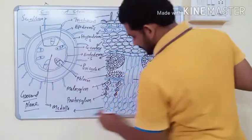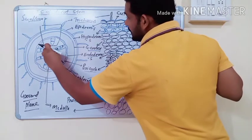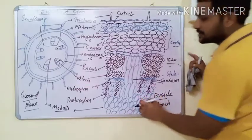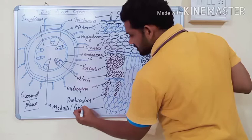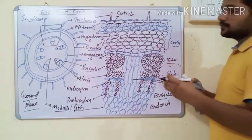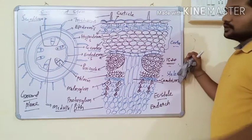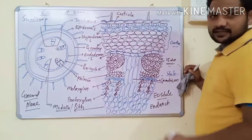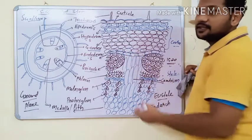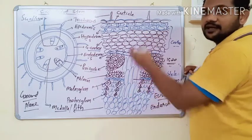The next tissue is medulla. Medulla consists of centrally located parenchymatous cells. A large amount of medulla is present at the center of dicot stem. Medulla is also known as pith. Since it is made up of parenchymatous cells, its function is to help in slow conduction of water, minerals, and food material from cortex to stelar region and vice versa.